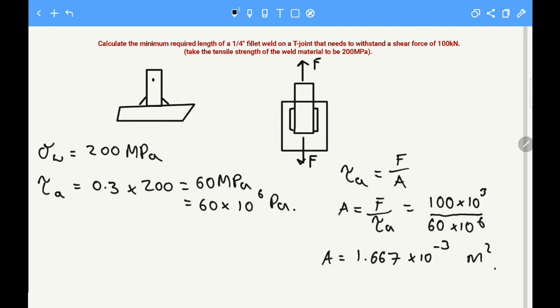But we're not interested in what the area is, we want to know what length of weld that translates into. The length of the welds, to calculate that we take the area and we know the area equals length times the throat thickness of the weld.